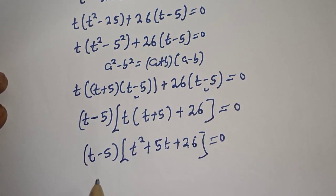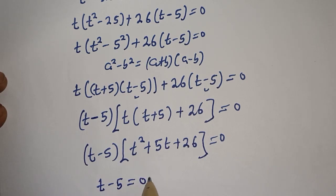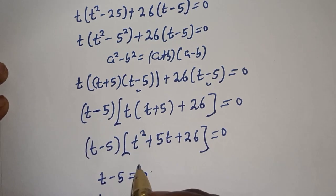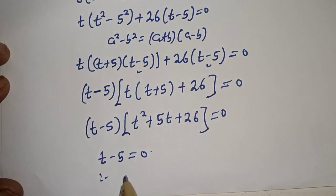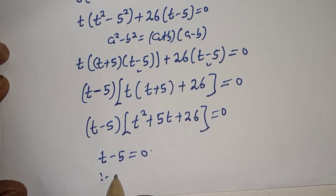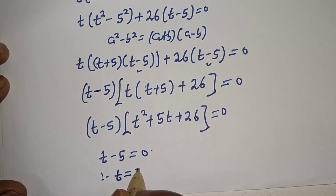There are two cases. For the first case: t minus 5 equals 0, therefore t equals 5.